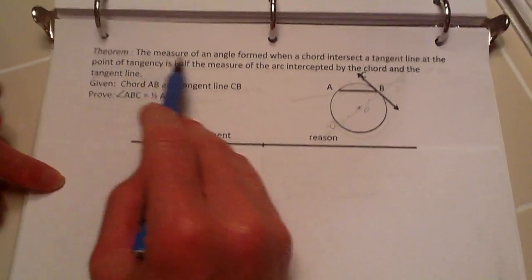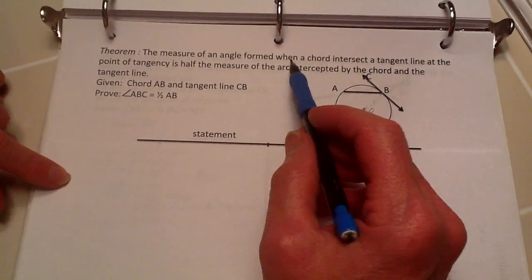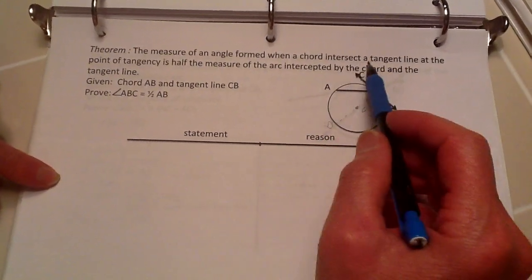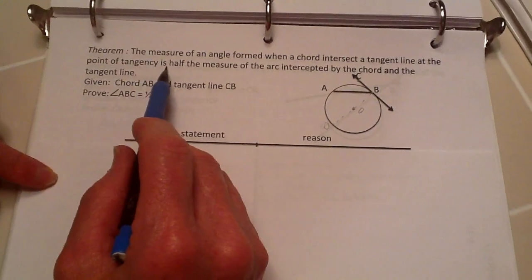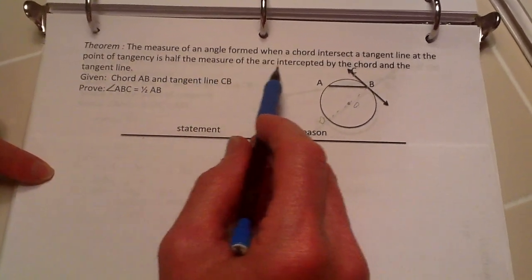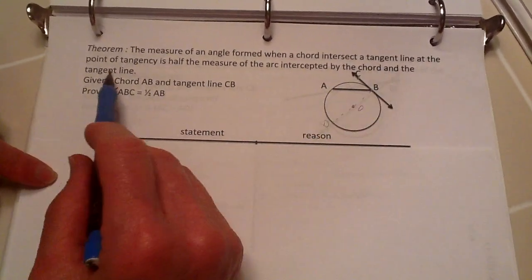Now to prove the measure of an angle formed when a chord intersects a tangent line at the point of tangency is half the measure of the arc intercepted by the chord and the tangent line.